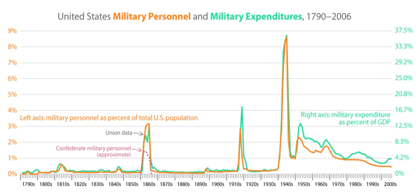The war on terrorism is a global effort by the governments of several countries—primarily the United States and its principal allies—to neutralize international terrorist groups, primarily Islamic extremist terrorist groups including Al-Qaeda, and ensure that countries considered to be rogue nations no longer support terrorist activities. It has been adopted primarily as a response to the September 11, 2001 attacks on the United States. Since 2001, terrorist-motivated attacks upon service members have occurred in Arkansas and Texas.